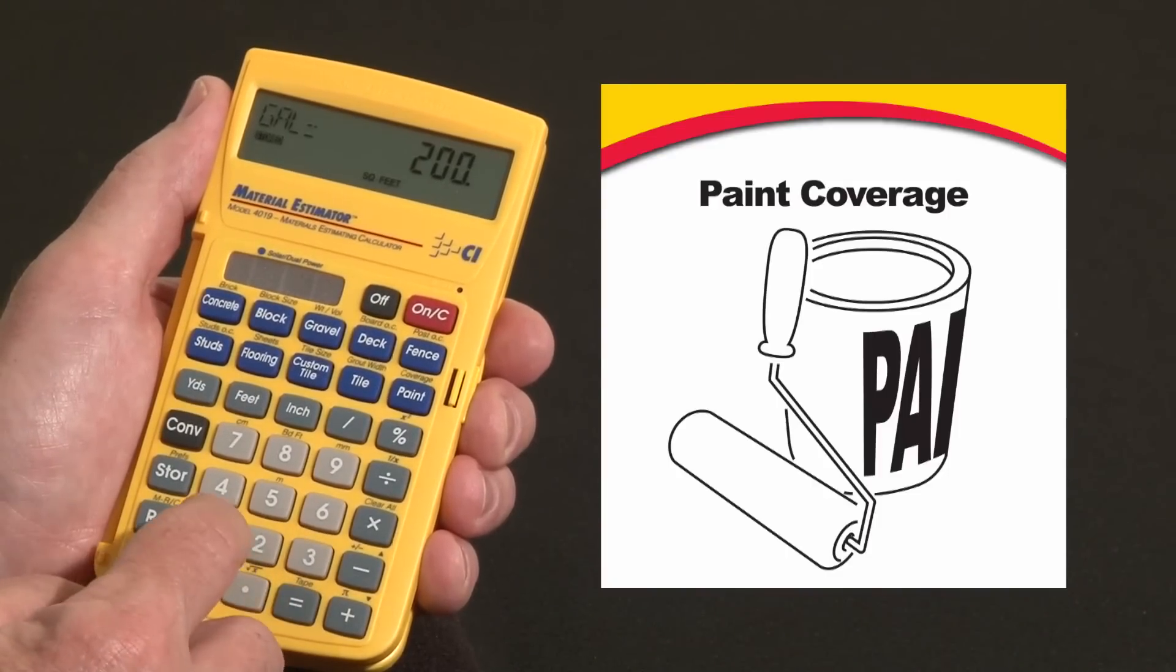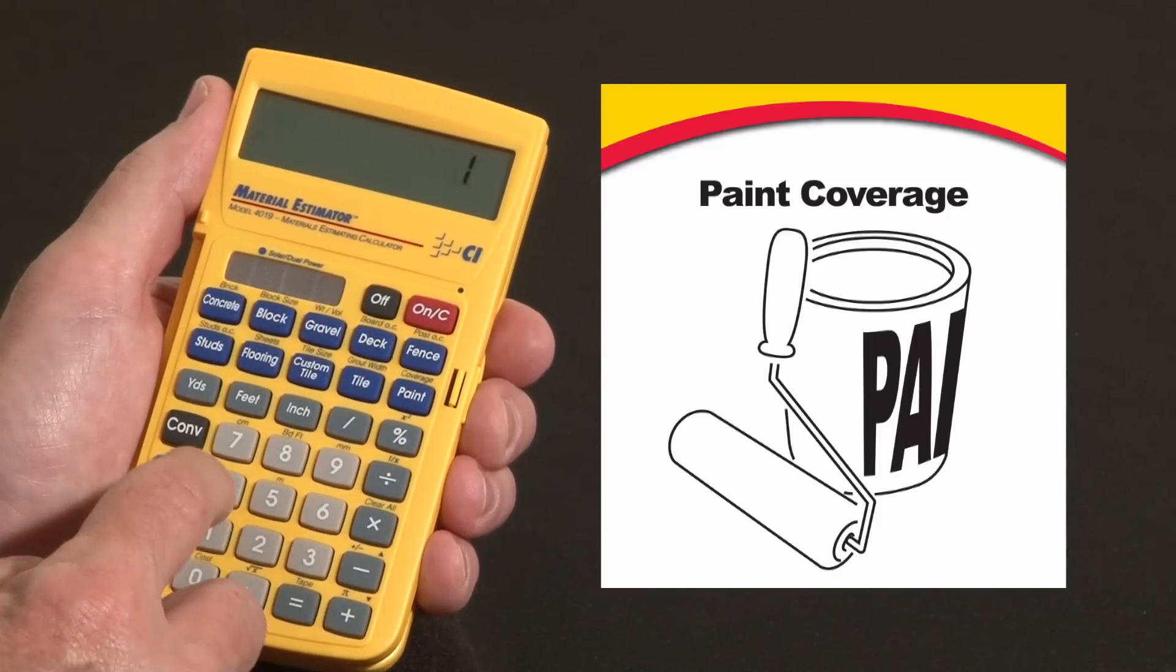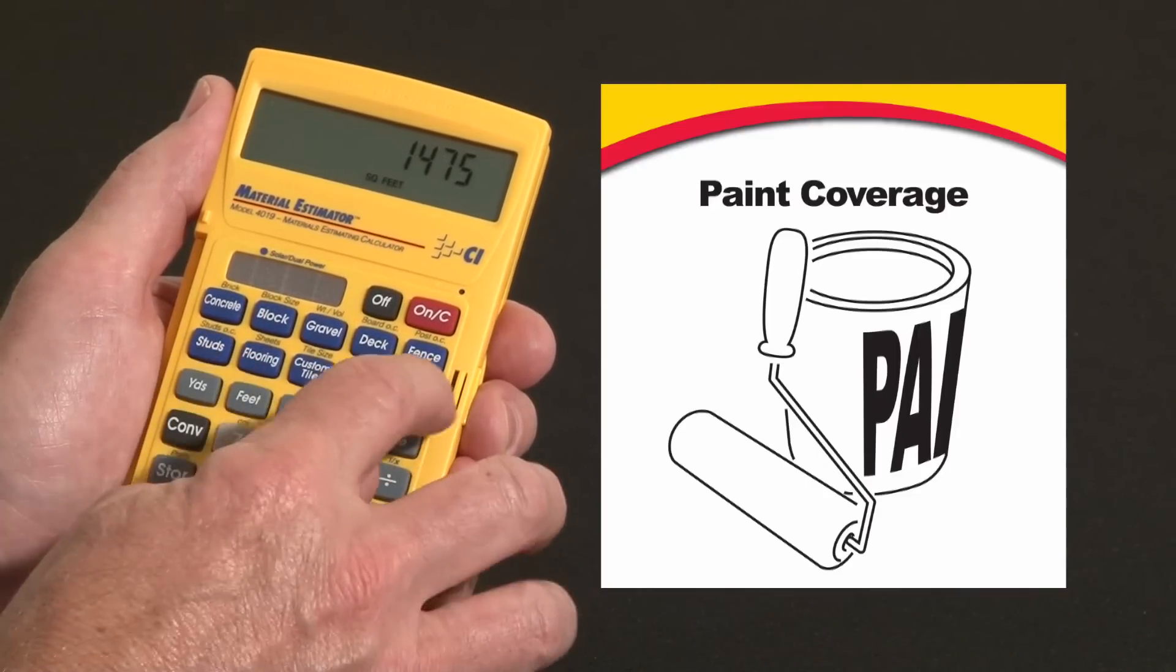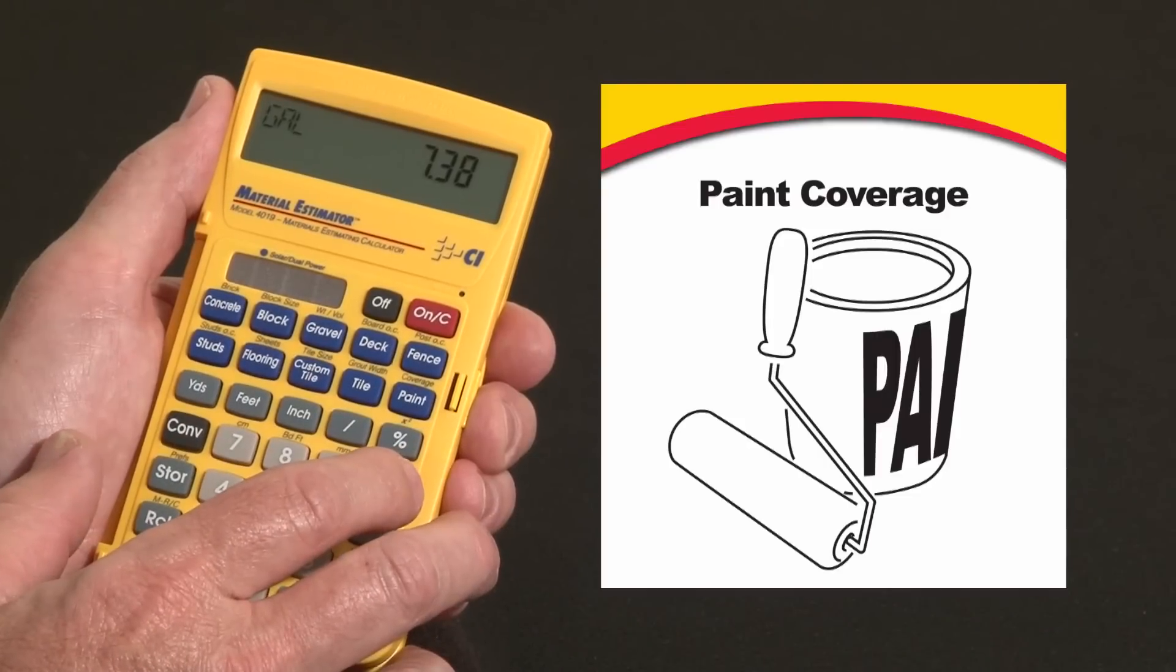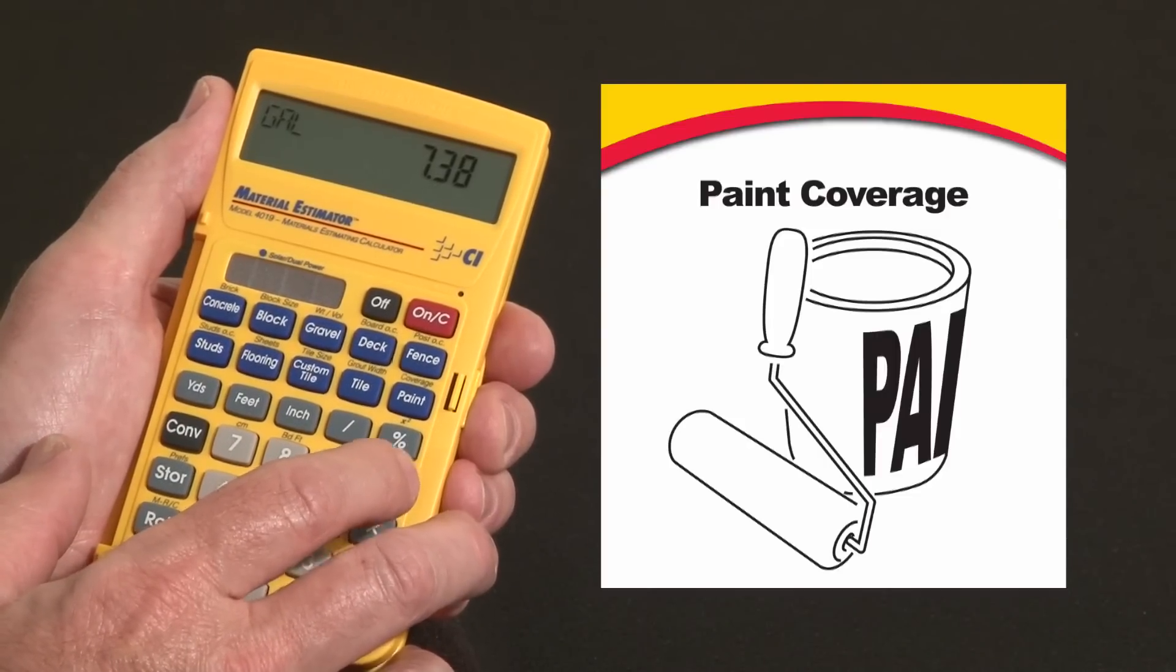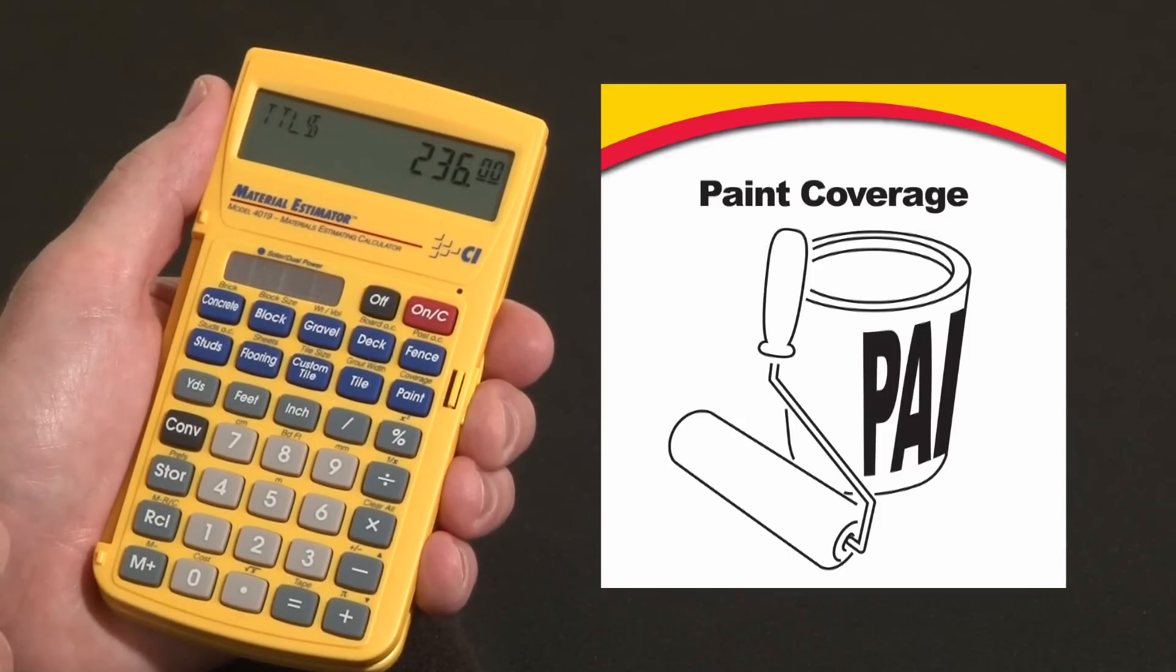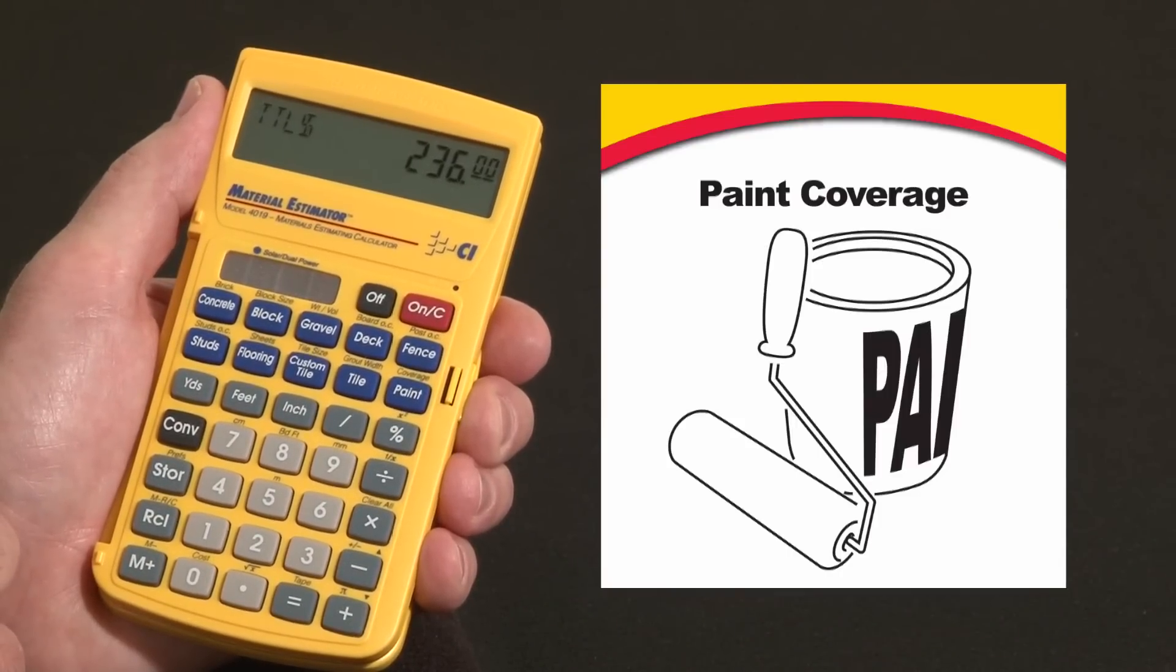And if we have the same square footage, let's say we've got 1,475 square feet—now paint—it's going to take 7.38 gallons. At $32 a gallon, times 32, convert to cost, that's going to be about $236 worth of paint.